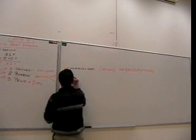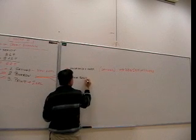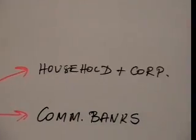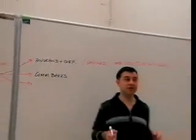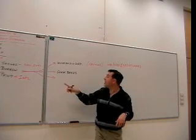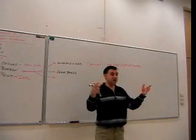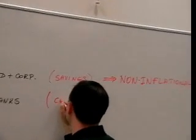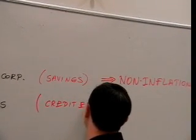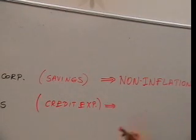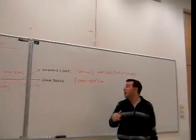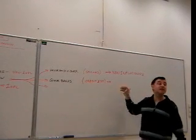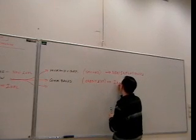The second financing option is borrowing from commercial banks. Commercial banks provide fresh credit to the government by creating new loans - meaning credit expansion. The source is credit expansion, which expands money supply, making this inflationary.